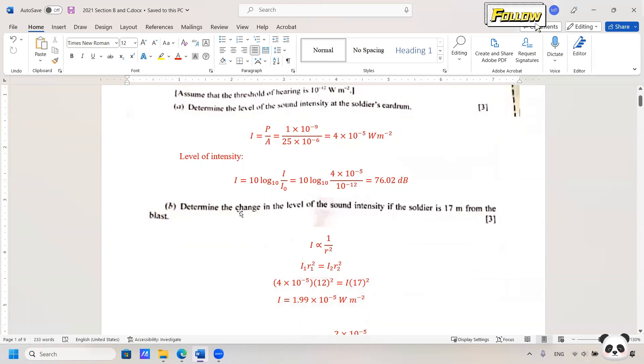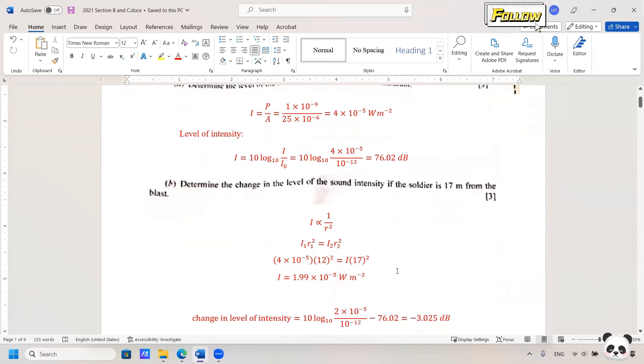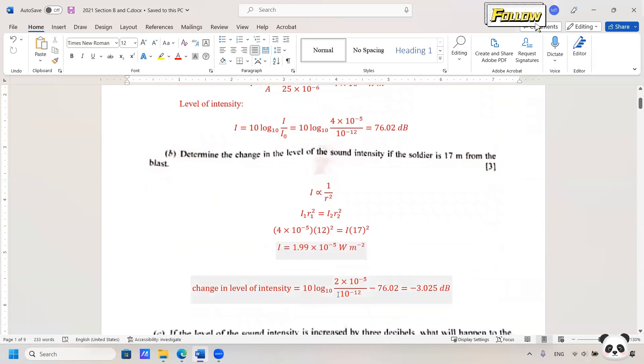And you also need to find out the change in the level of the sound intensity. So convert the intensity to the level, which is about 79, and the change will be the final minus the initial intensity equal to negative 3 dB. So as the soldier stands further from the blast, sound intensity should be lower than the previous case.